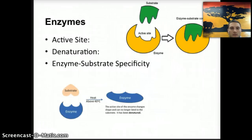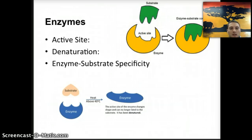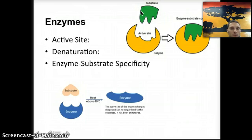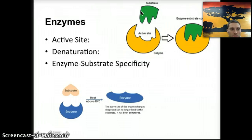Enzymes have a couple of different specific parts to them. The first is something called an active site. In our diagram, that would be right here. An active site is a surface, or the region of the enzyme, to which the substrate binds. And when it binds to it, it actually carries out the chemical reaction — the enzyme carries out the chemical reaction with the substrate.